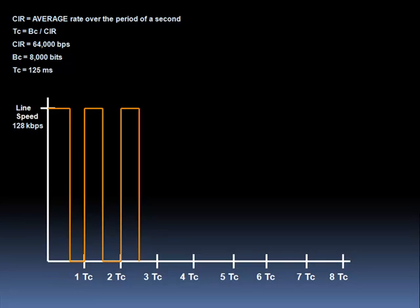What we're doing is sending 8,000 bits eight times. Do you see how this is working out? We sent 8,000 bits eight times, so over the period of a second, on average, we sent 64,000 bits per second. That's how we can send at less than the line rate.